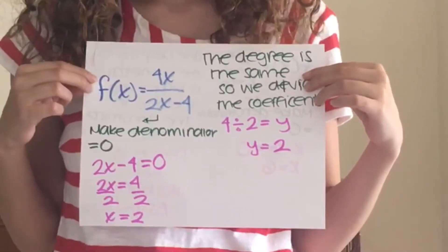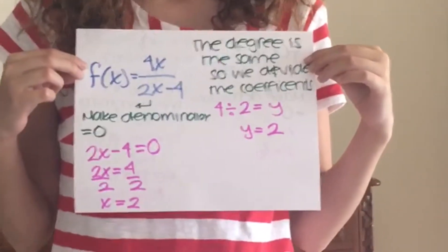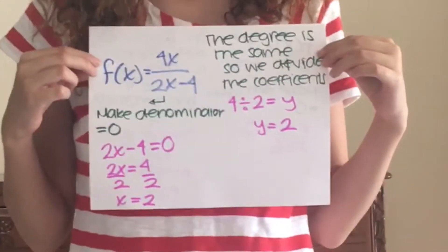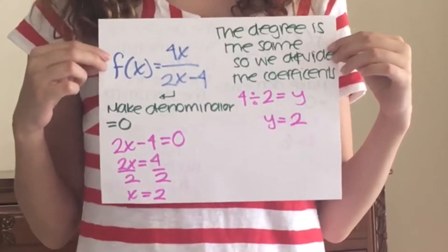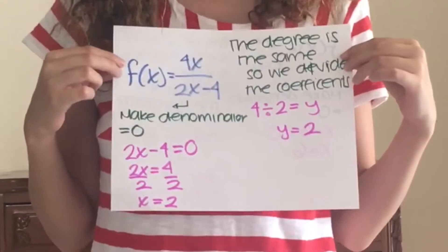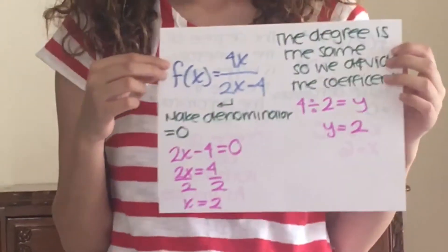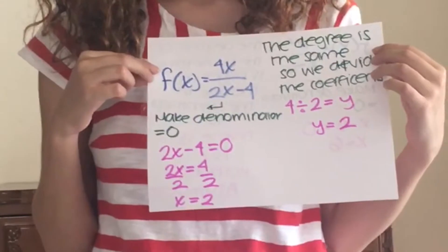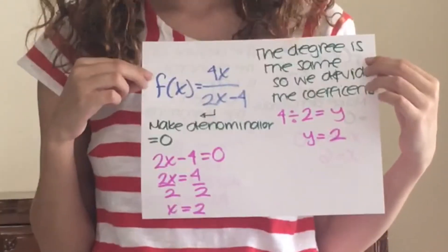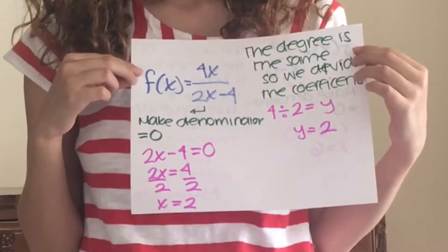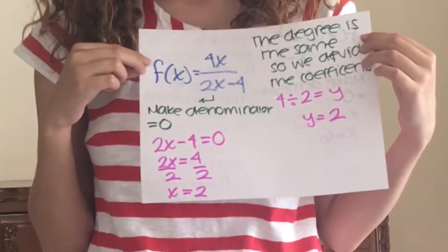4x over 2x minus 4. The degree of the numerator is the same as the denominator, so we divide the coefficients: 4 divided by 2, meaning y is equal to two. The horizontal asymptote is at two. To find the vertical asymptote, we make the denominator equal to zero: 2x minus 4 equals zero, so 2x equals four, and x is equal to two.